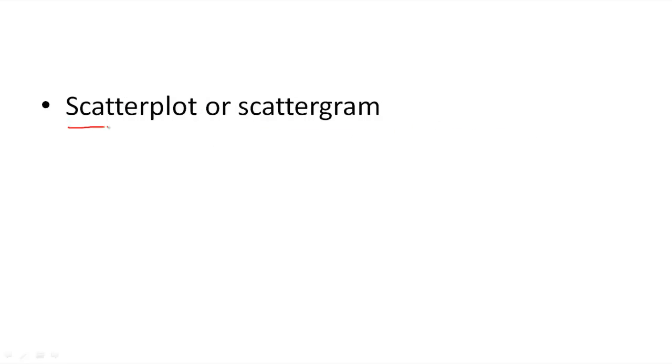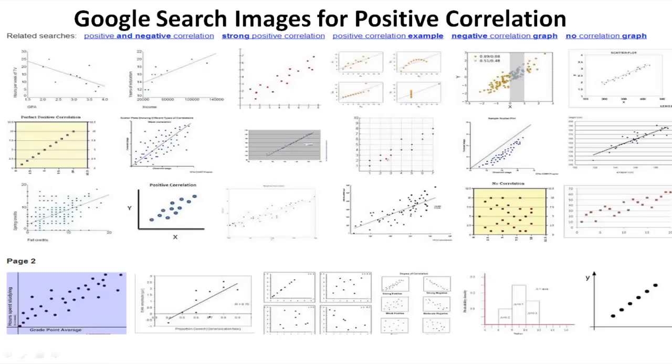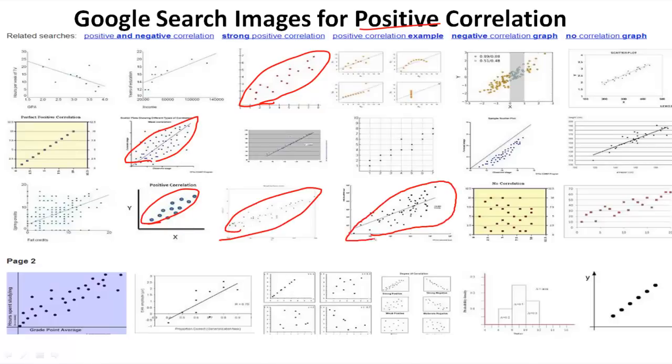One of the ways that you can look at correlation data is with a scatterplot or a scattergram or a scattergraph, depends on who your teacher is and what your book says. This is just a quick Google search for positive correlation, and if you take a look at positive correlations, you will notice that they all tend to form an oval along a bottom left to top right format. That's going to be a positive correlation visually, and these kinds of questions have been on previous AP Psych exams.